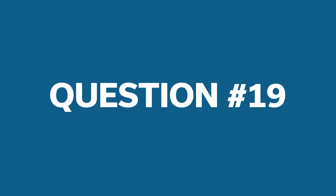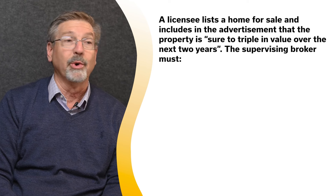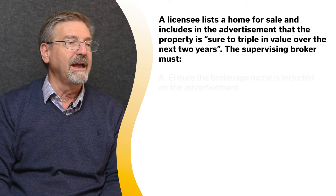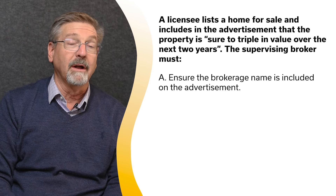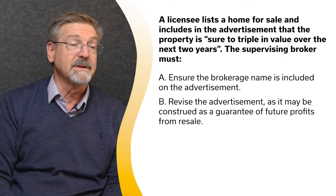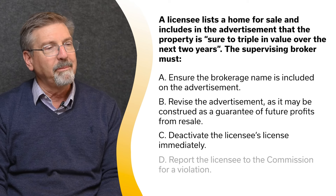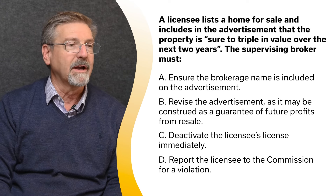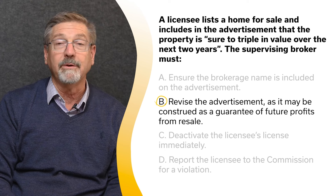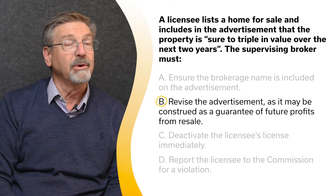A licensee lists a home for sale and includes in the advertisement that the property is sure to triple in value over the next two years. The supervising broker must: A. Ensure the brokerage name is included on that advertisement. B. Revise the advertisement as it may be construed as a guarantee of future profits from resale. C. Deactivate the licensee's license immediately. Or D. Report the licensee to the Commission for a violation. The correct answer is B. No licensee may guarantee future profits or resale value of real estate.